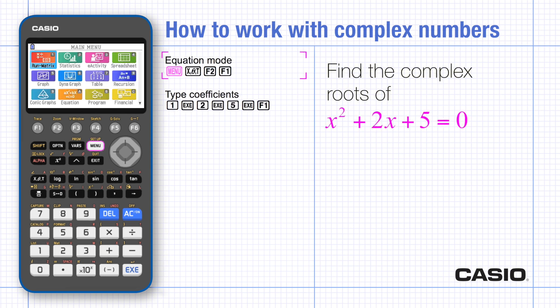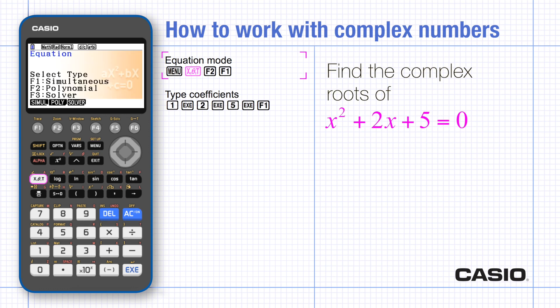From the main menu, go to equation mode, choose polynomial degree 2. Type in the coefficients 1, 2, and 5 into the matrix and then solve.